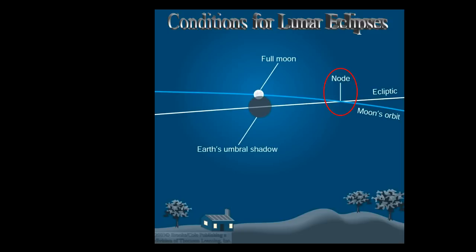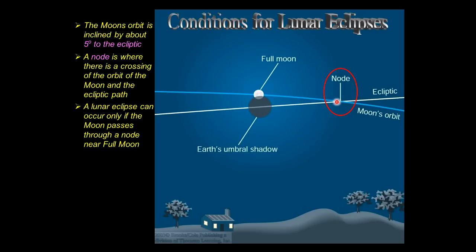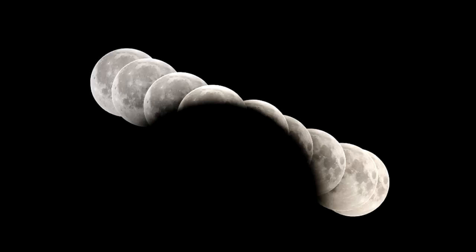There's a five-degree tilt between the ecliptic and the moon's orbit, with a node at their intersection. A lunar eclipse can only occur if the moon passes close to or on a node where there's a full moon, so the earth's shadow is superimposed on that point. We don't need perfect alignment because the earth's umbral shadow is large enough - spanning multiple moon diameters - that even without direct coincidence with the nodal line, you still get at least a partial eclipse of the moon.